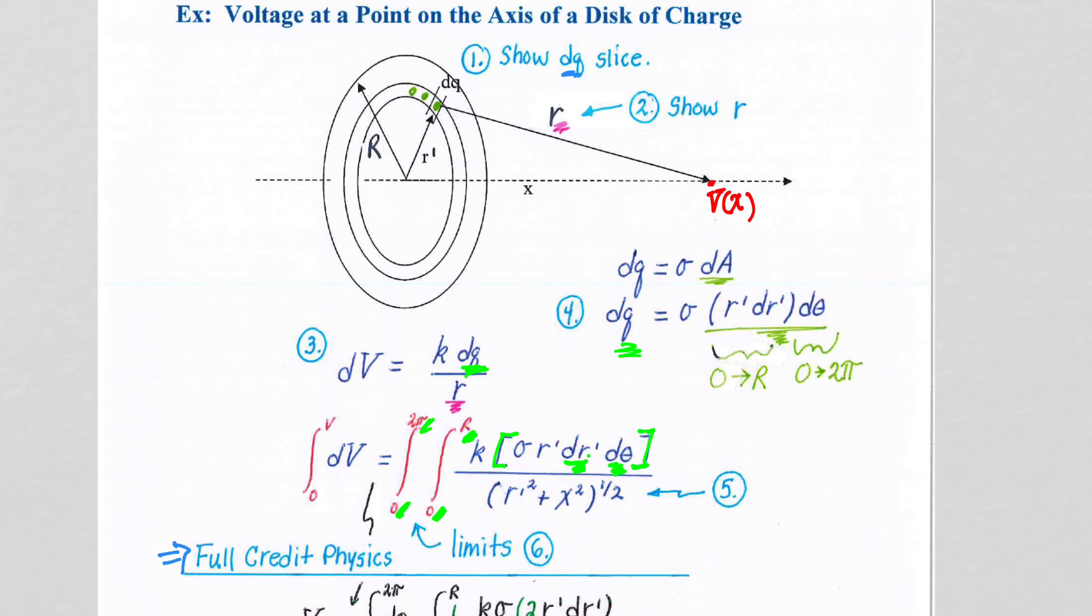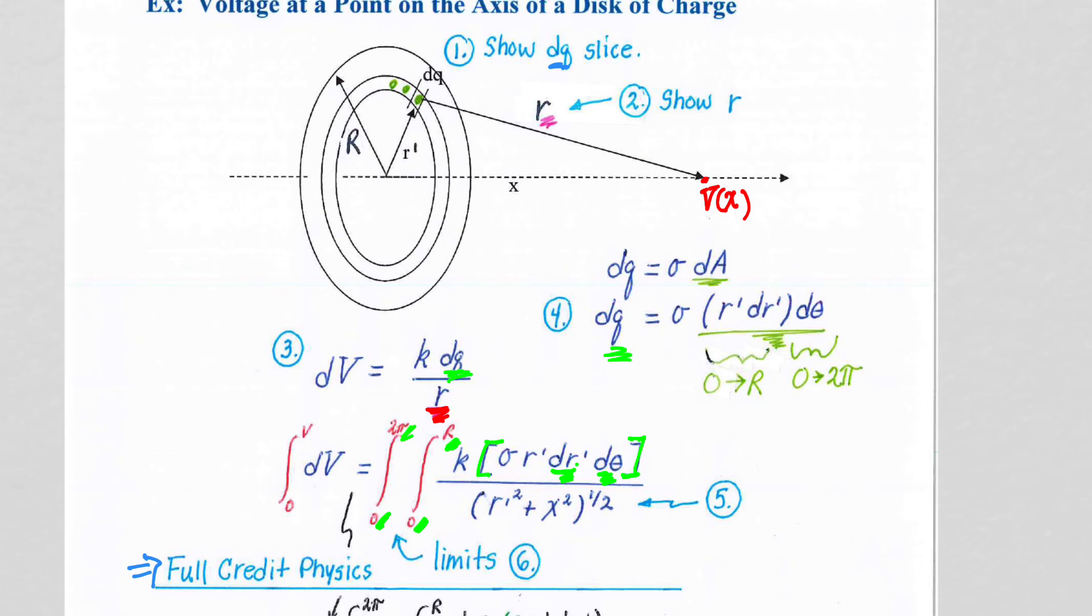Now, the little r we have to be a little careful with, because the little r has an r prime in it. So little r here, let me show that explicitly. Little r equals r prime squared plus x squared square root. So that is where this bottom term comes from. But that r prime has to be in there to be with the r prime dr prime that we have.